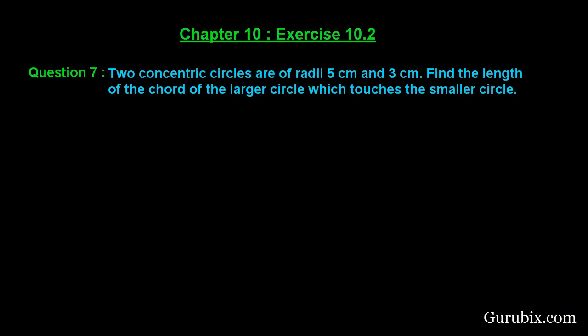This is a very interesting question. Let us solve it. Suppose these are the two concentric circles with center O, and here we have a chord of the larger circle. Suppose the chord is AB which touches the smallest circle at point P.